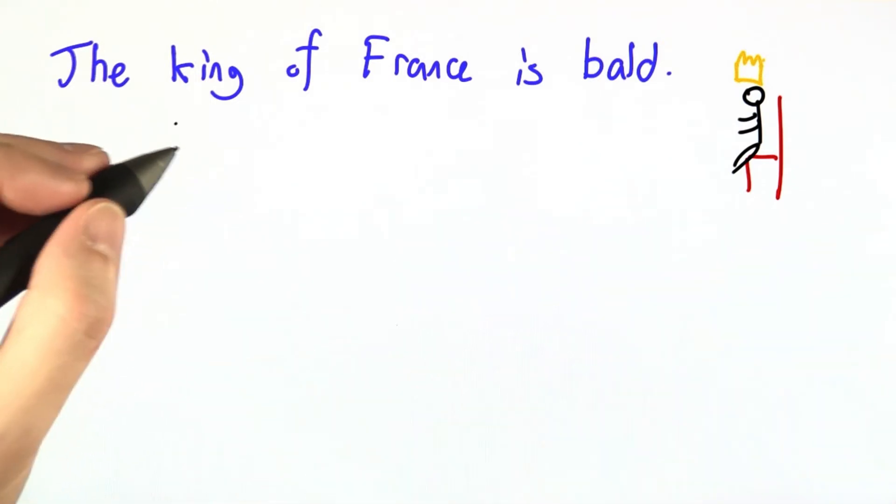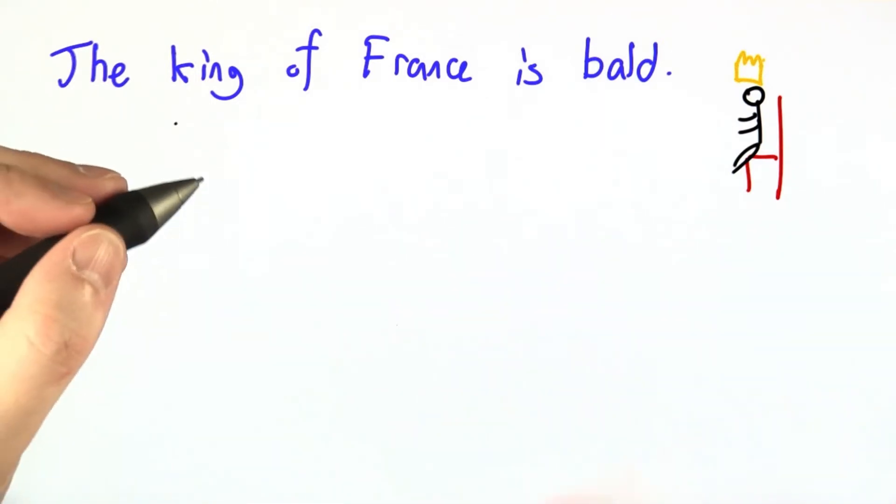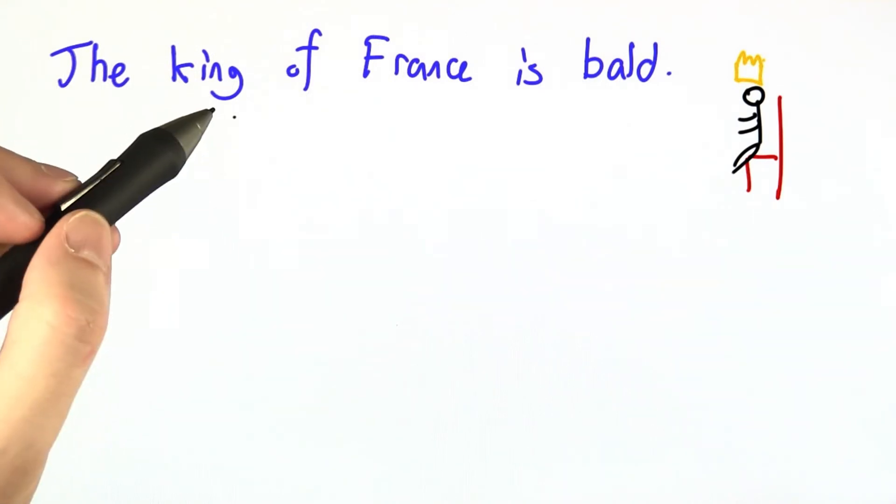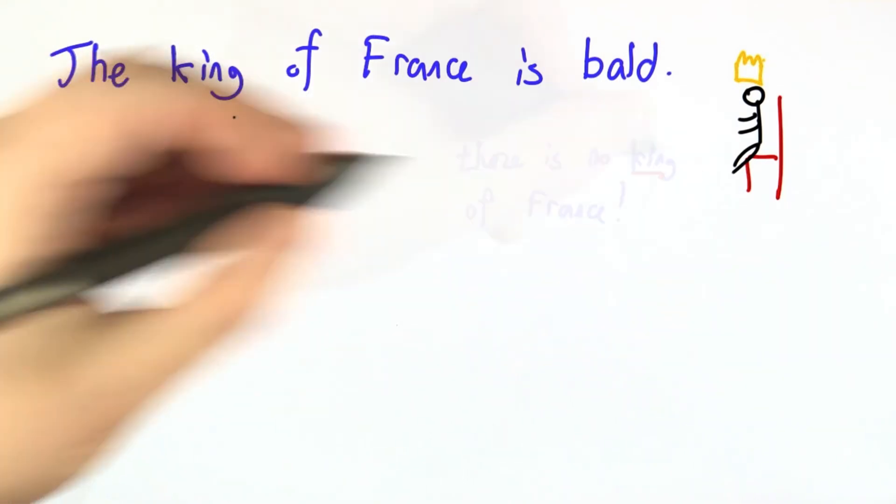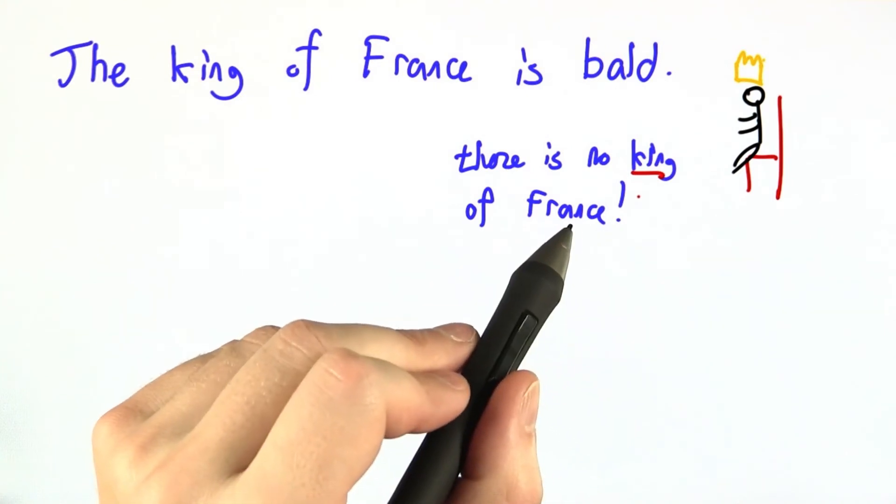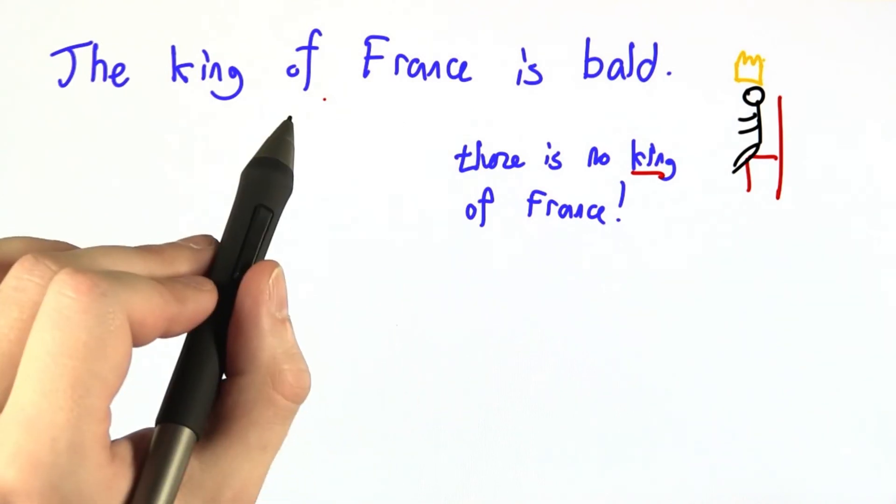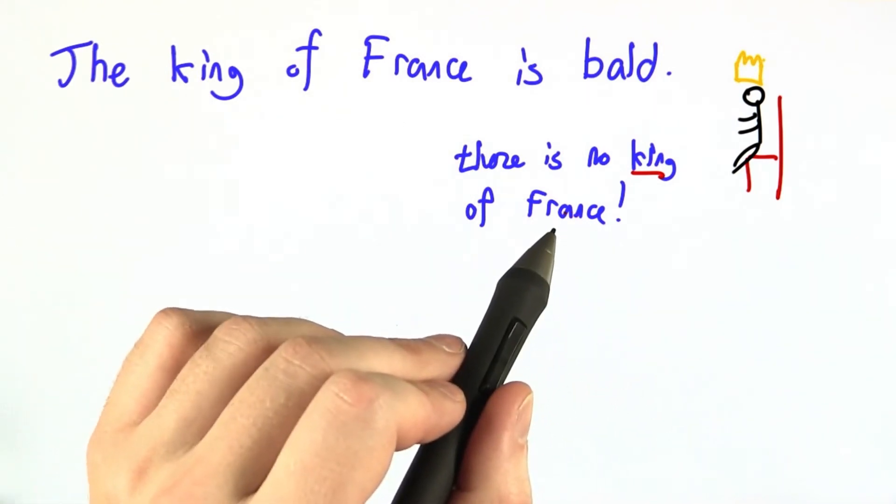But knowing what it means, whether it represents the world correctly or not, depends on knowing the current state of the world. For example, as of the time of this recording, there is no king of France. France is not a monarchy. So it's not clear what it means to talk about the hair of the king of France when there is no king of France.